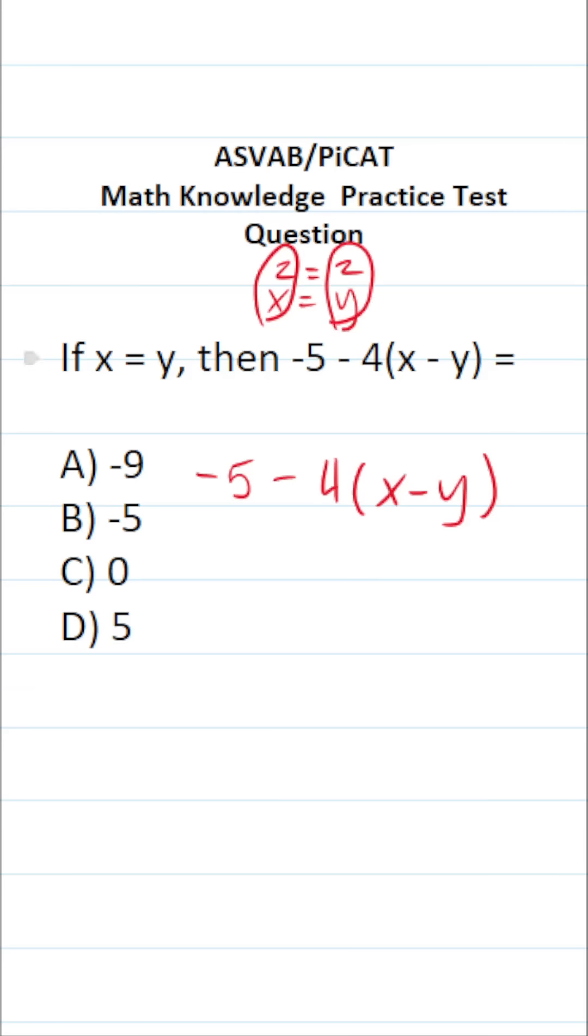Now we know x is 2 and y is 2, and we can plug it into this expression and evaluate it accordingly. This becomes -5 - 4(2 - 2).